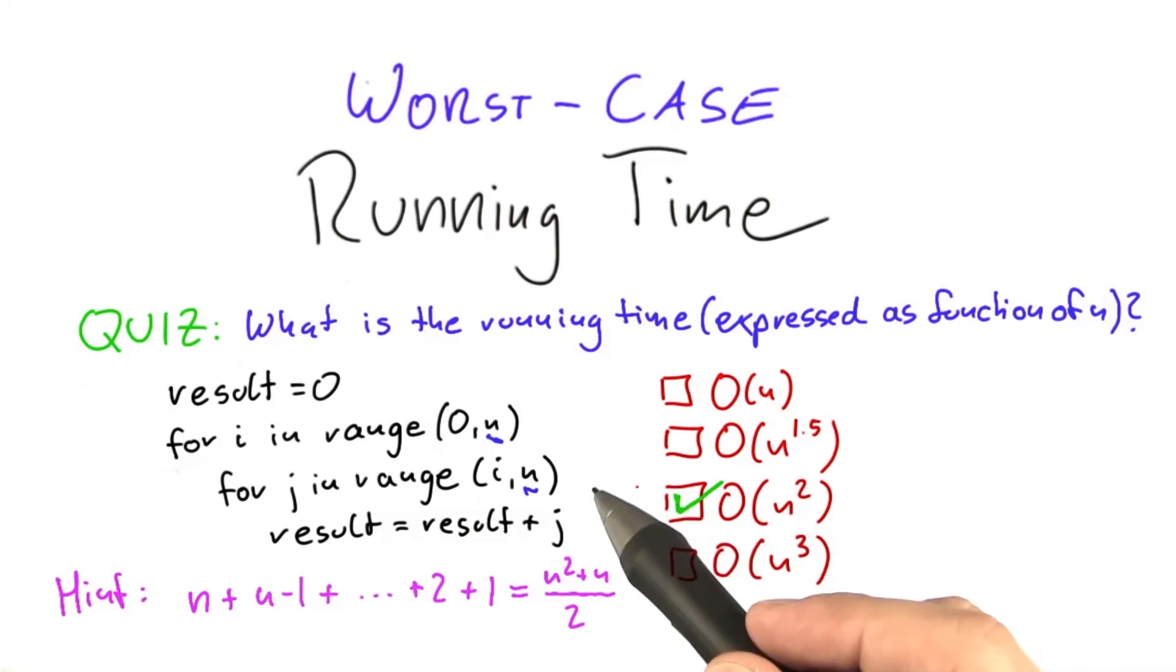One final thing, of course, O of n to the power of 3 is technically correct, but as I already mentioned when discussing O notation, you want your bound to be as tight as possible. So this is really the only correct solution.